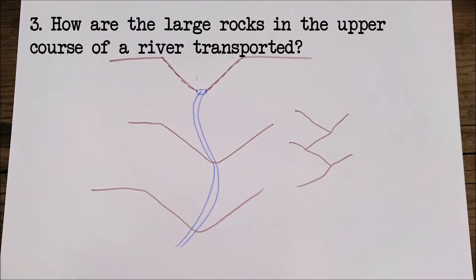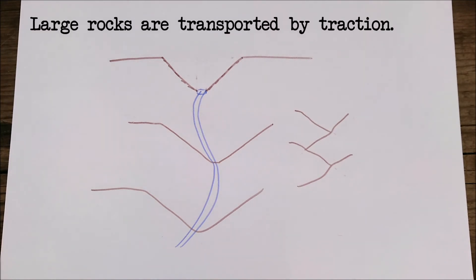Question three: How are the large rocks in the upper course of a river transported? Well, large rocks are transported by traction, which is a sort of rolling motion.